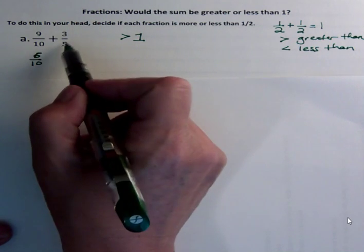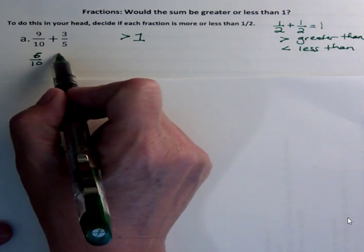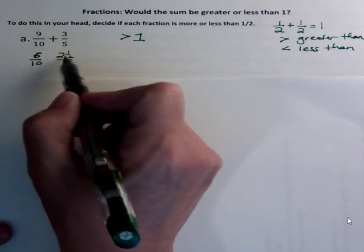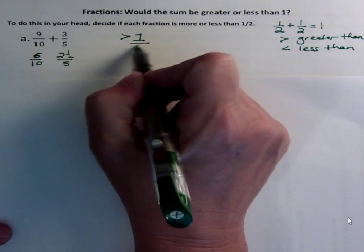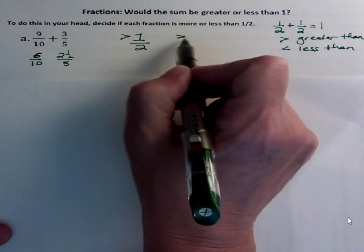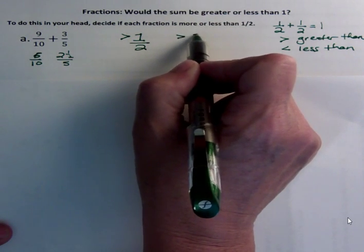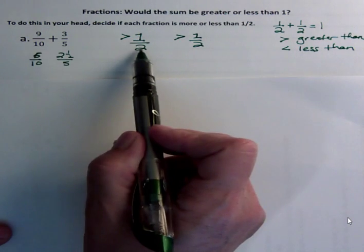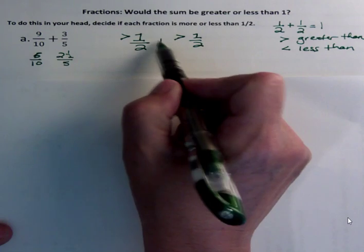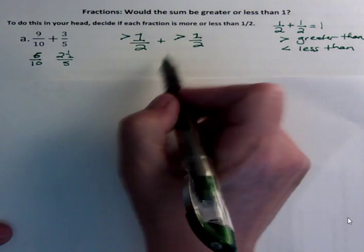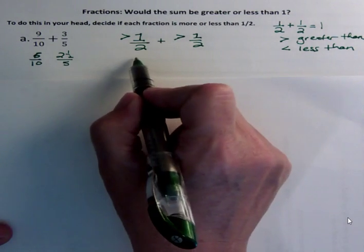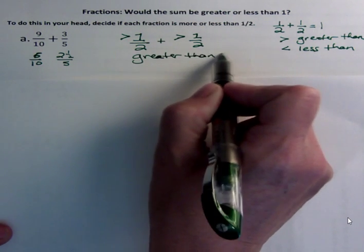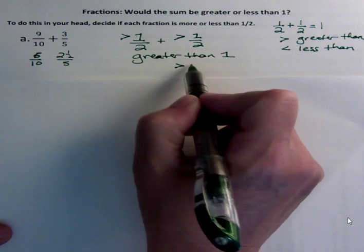Okay, so now what about three-fifths? Well, half of five is two and a half, and three is more than that, so we also know that the second part is greater than one-half. So the first part, nine-tenths is greater than a half, and three-fifths is also greater than one-half. So our answer is greater than one.